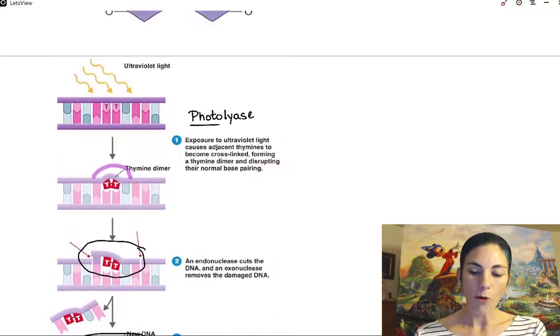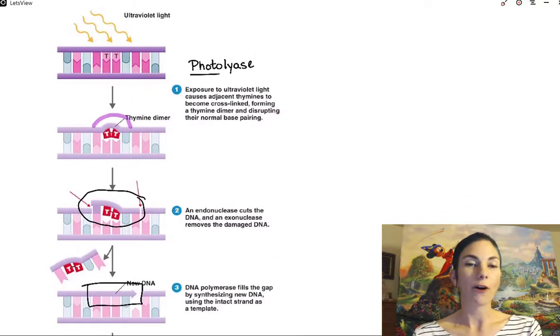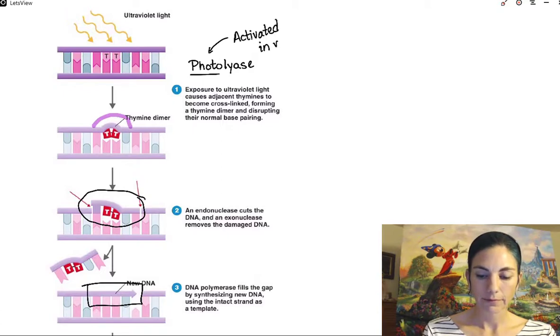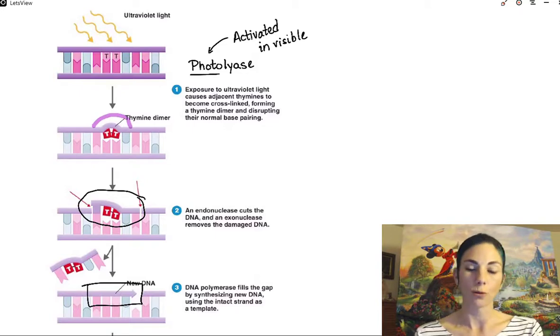Now, most bacteria have photolyase or something comparable. In E. coli, photolyase is only activated in the light. In other words, it has to be light outside for this enzyme to work.